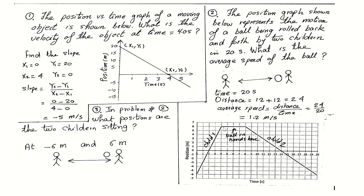Remember: when you see the ball's position is not changing, that means the ball is in the hand of one of the two children. Problem number three asks: what positions are the two children sitting at? As mentioned, the first child is at negative six and the second child is at positive six.